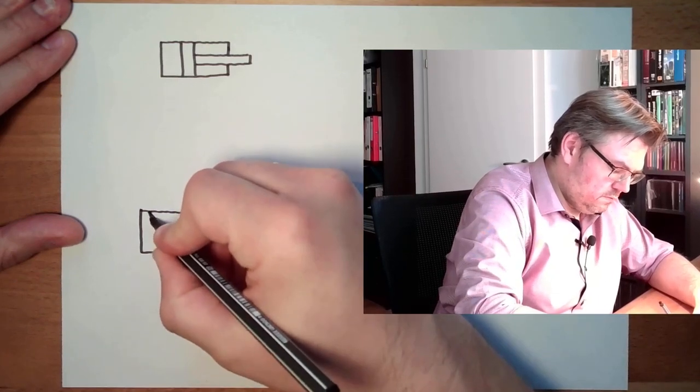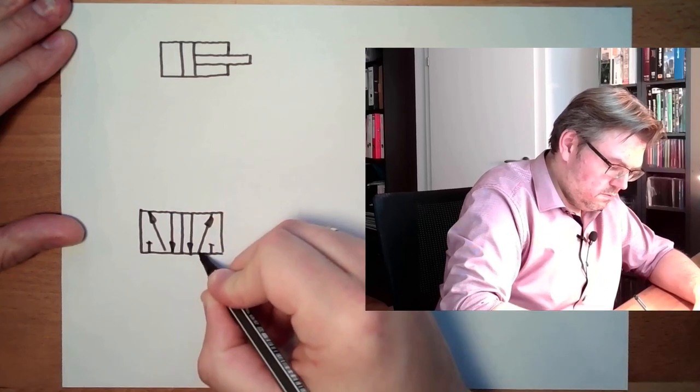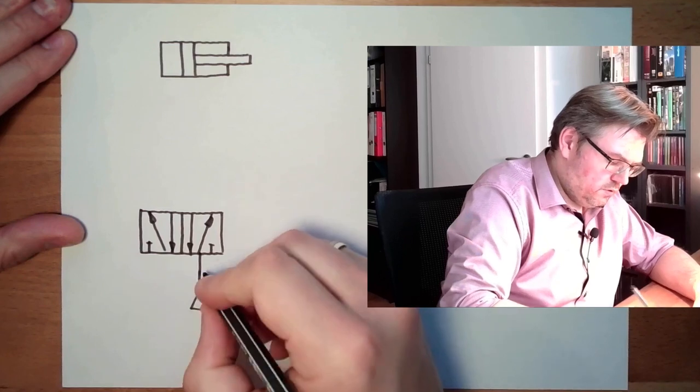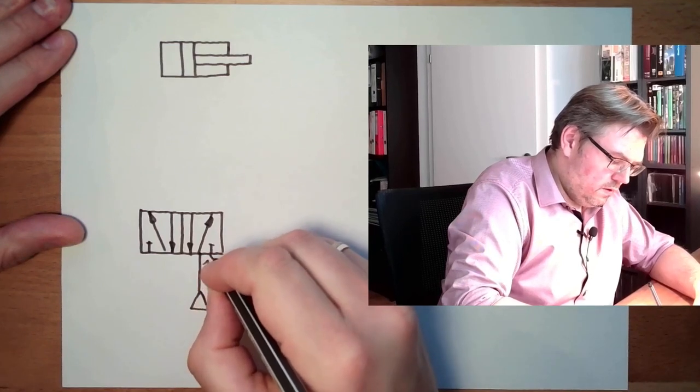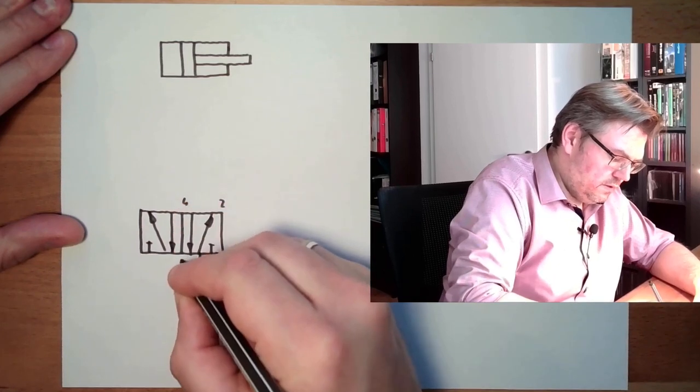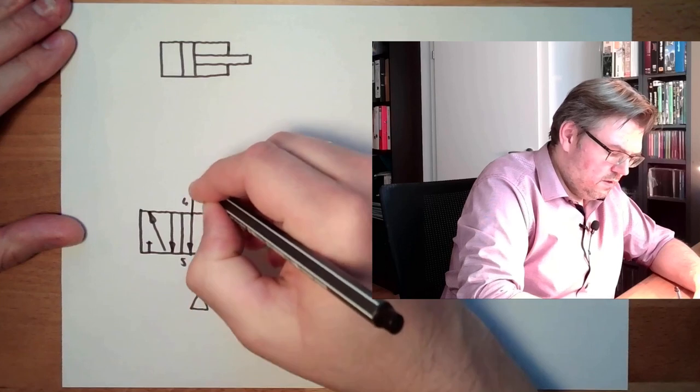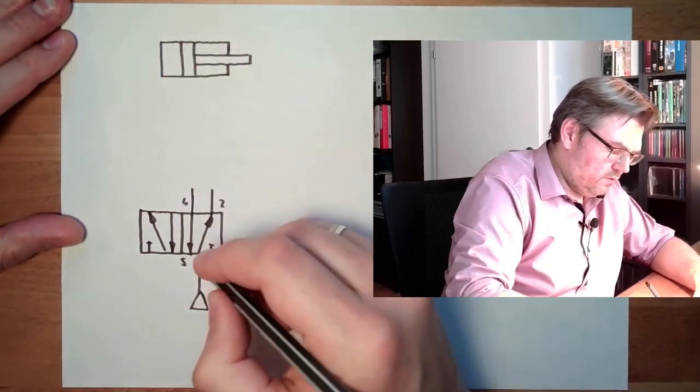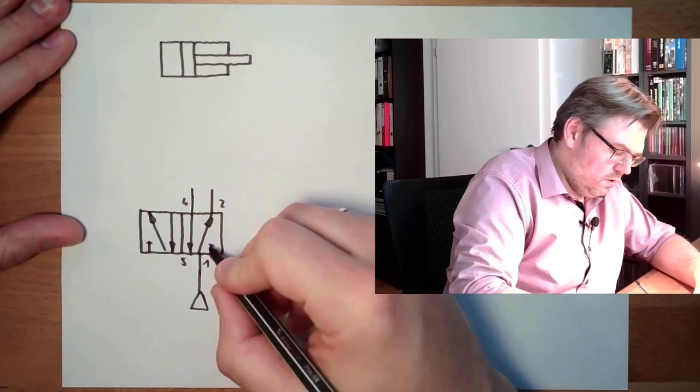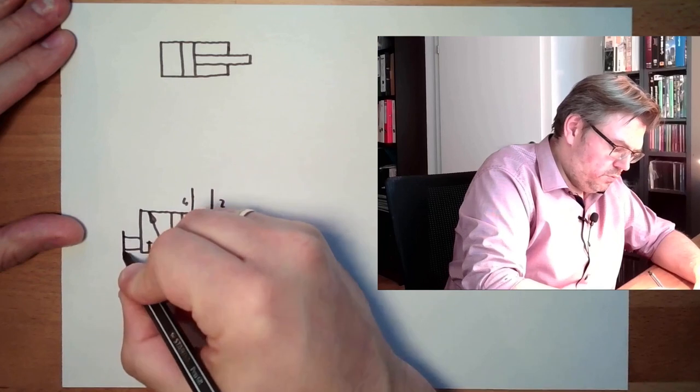Here would be the pressure source. So here we have one, this is two, this is three, this is four, this is five. This is connected to here, this is connected to here. And here, spring, push button. Let's make simply a push button.